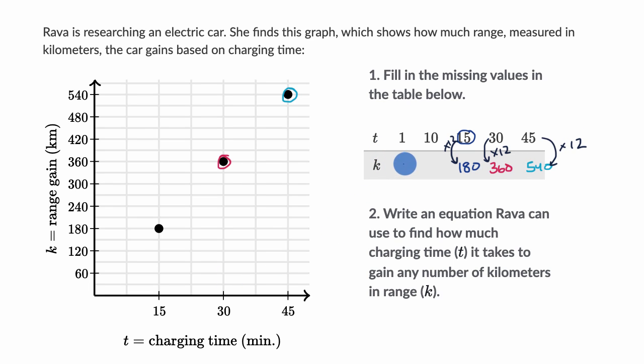So assuming K is just going to be 12 times T, we know that when T equals one, K is 12. And when T equals 10, 10 times 12 is 120.